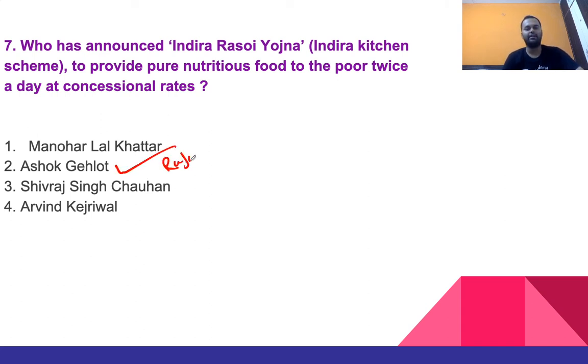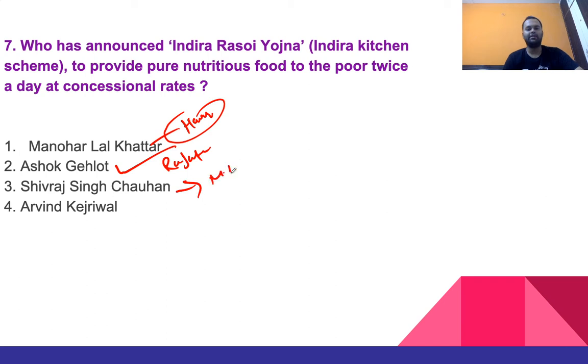Quick recap for context: Manohar Lal Khattar is the CM of Haryana, and Shivraj Singh Chauhan is the CM of Madhya Pradesh. Ashok Gehlot is from Rajasthan.